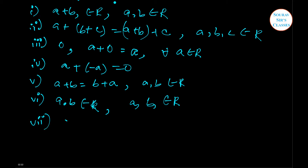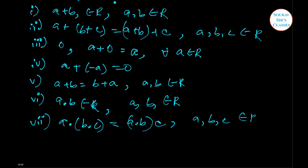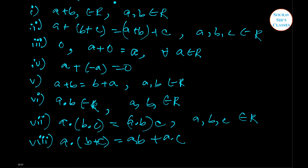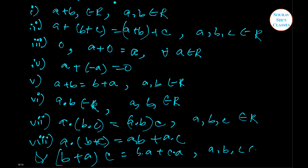Number seven gives us the distributive law again for any three elements a, b, c belonging to R. And number eight similarly gives us the expanded distributive form for any three elements a, b, c belonging to R.